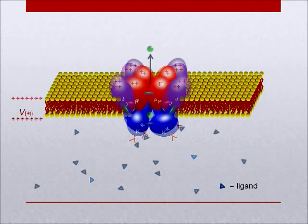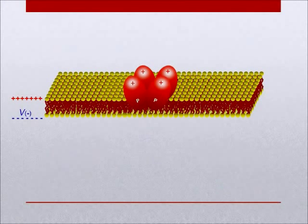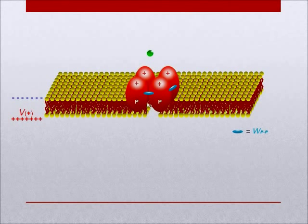Consider an ion channel gated by both voltage and ligand concentration. The core of the channel is made up of four interconnected P, or pore, particles embedded in the membrane. Activation of the lightly charged pore is the basis for ion conduction in the channel.